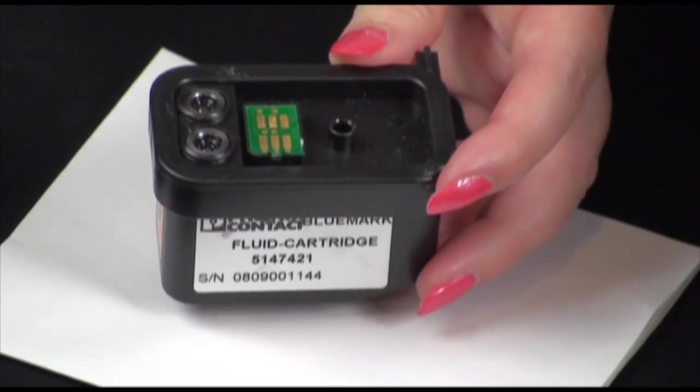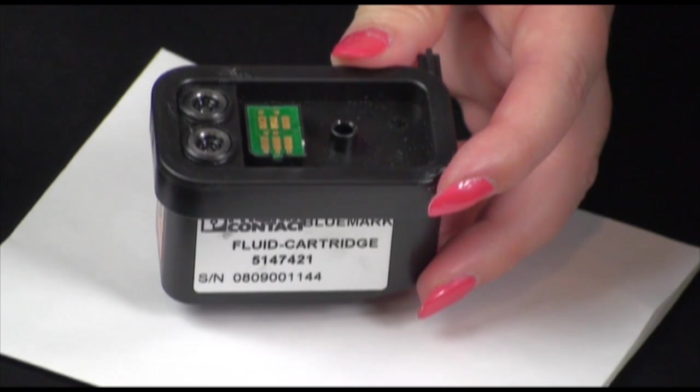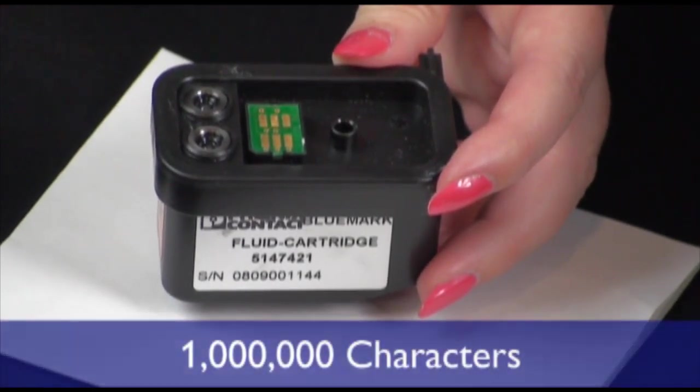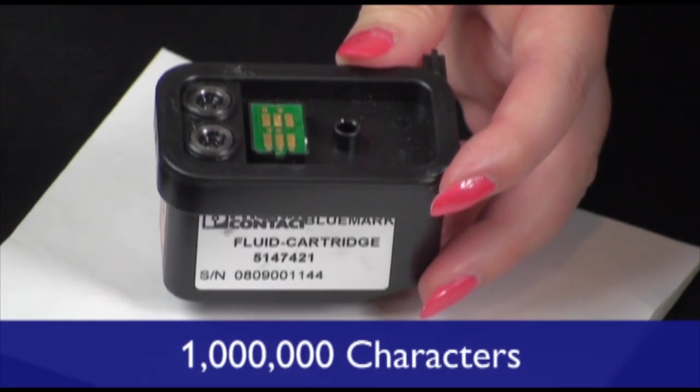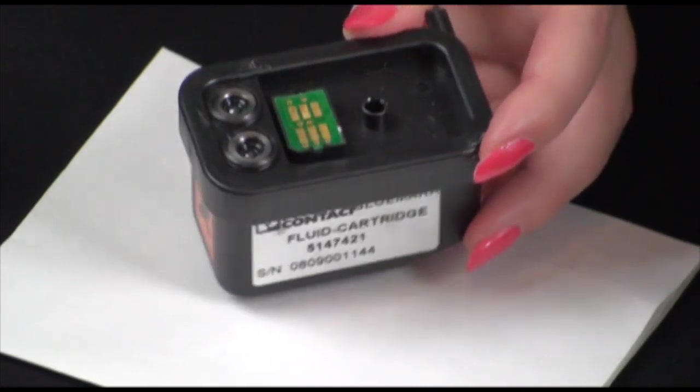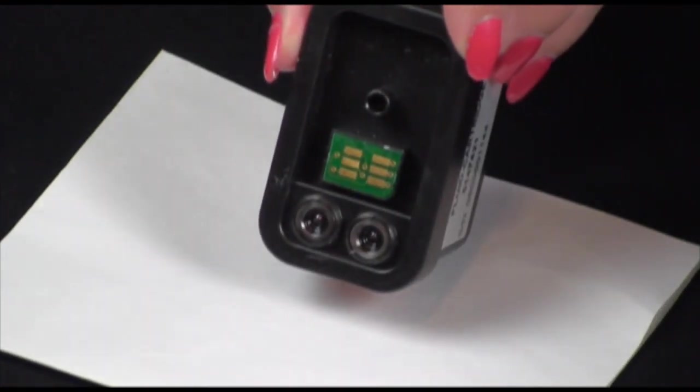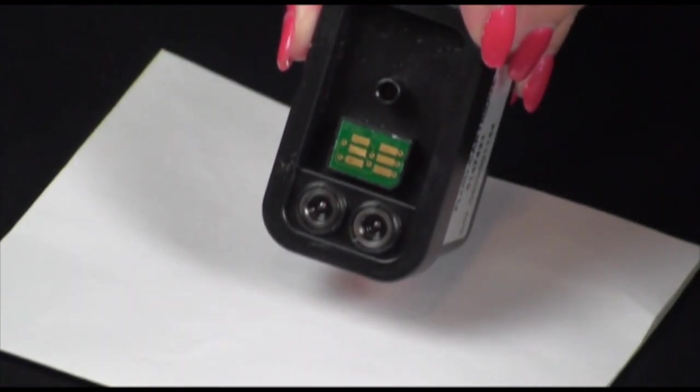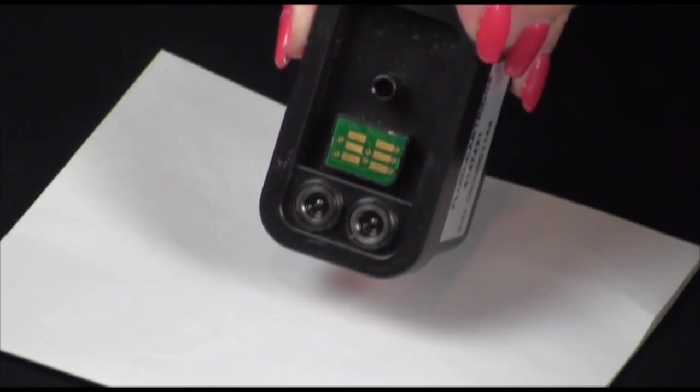The ink cartridge used with the Bluemark printer contains 28 milliliters of ink. This is enough capacity to do up to 1 million characters, which is approximately 5,000 unicards. The microchip in the base of the ink cartridge will let you know when you are running low on ink and need to order a replacement.